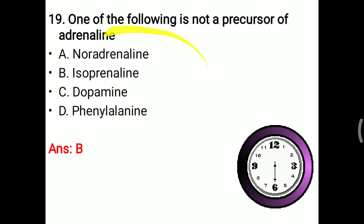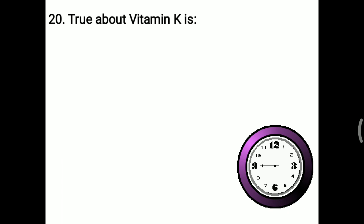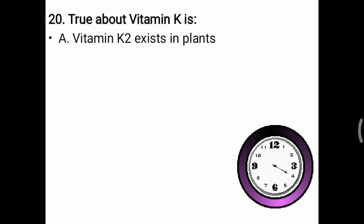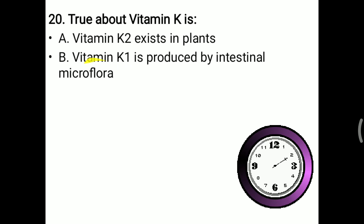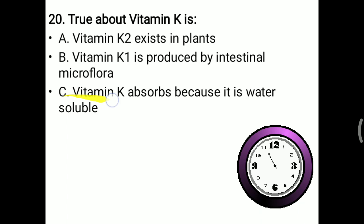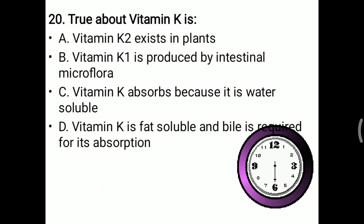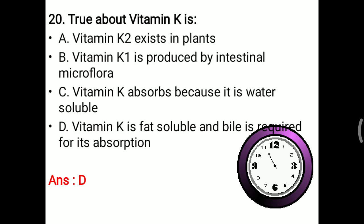Next question: what is true about vitamin K? Vitamin K is a fat-soluble vitamin. Options: vitamin K2 exists in plants (no), vitamin K1 is produced by intestinal microflora (not correct), vitamin K is absorbed because it is water soluble (no — it is not water soluble), vitamin K is fat soluble and bile is required for its absorption (yes — bile emulsifies vitamin K aiding absorption). So the right answer is D — vitamin K is fat soluble and bile is required for its absorption. These are the important MCQs frequently asked in NEET examinations.